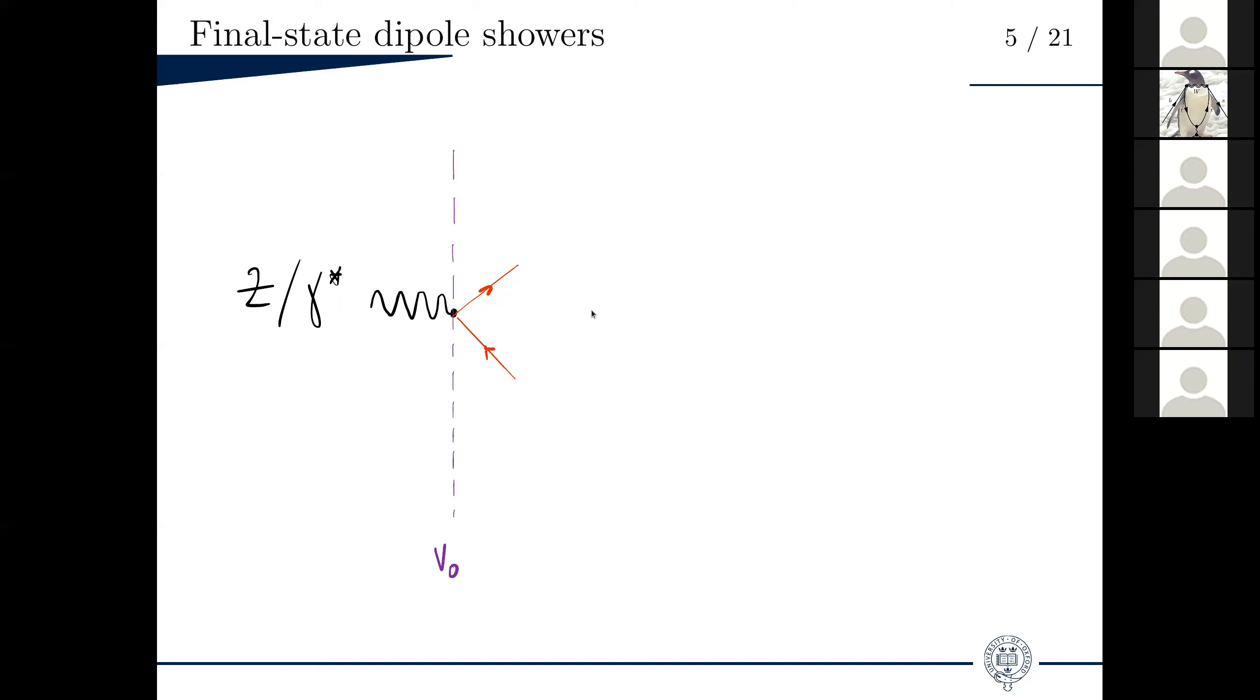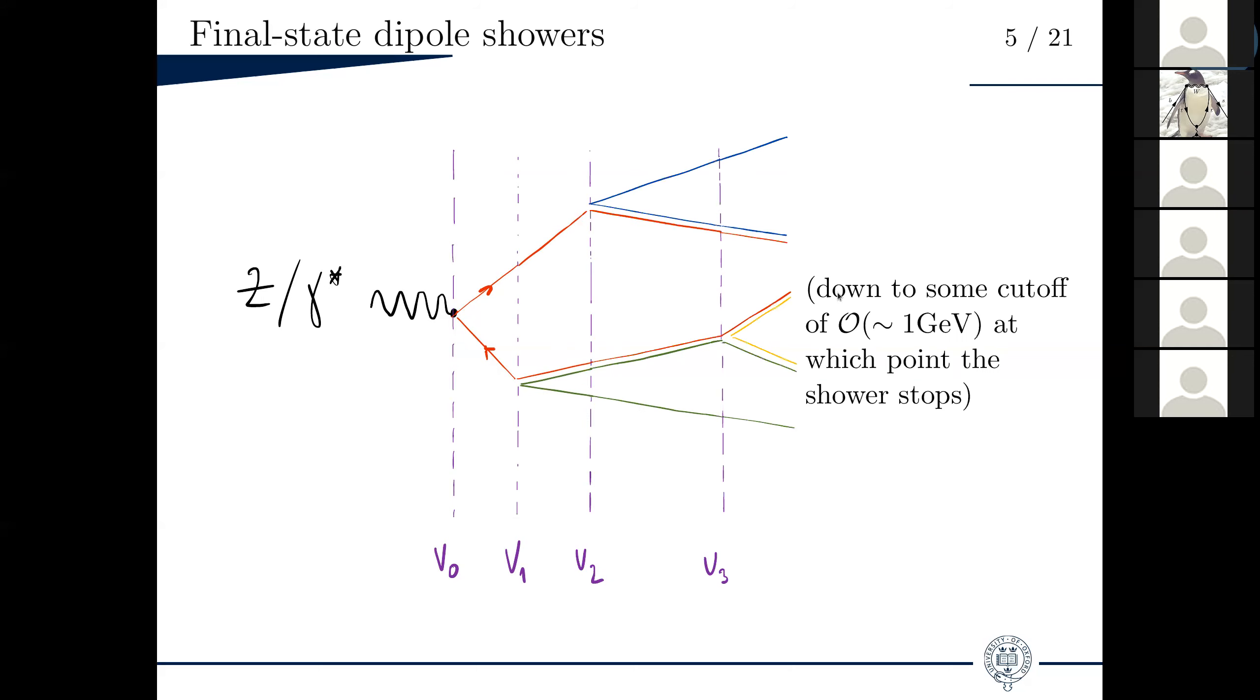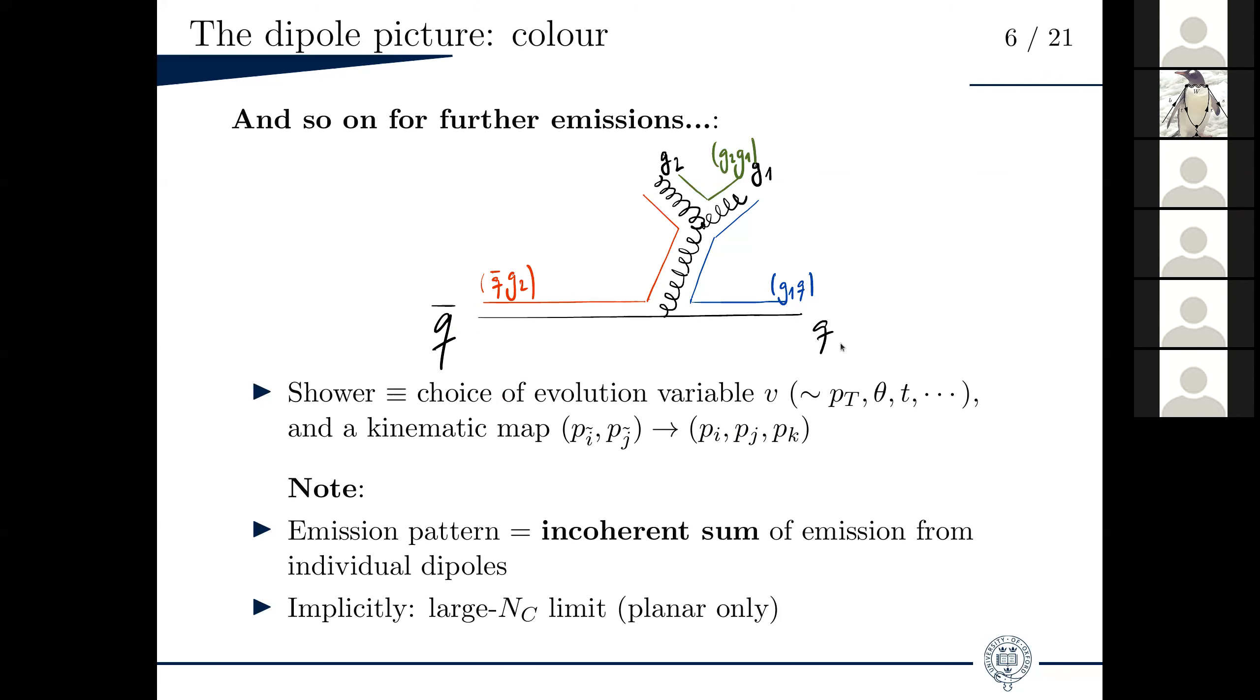Imagine that you start from a Q Q-bar event, say E plus E minus to Z to Q Q-bar. At this point, you have only one dipole, a Q-bar Q dipole, with an energy scale, V0, that is equal to the collision center of mass energy. As it turns out, that dipole obeys an evolution equation that gives you the probability of radiating or not radiating another colored particle at a lower scale. So effectively, iteratively for each emission, the algorithm samples the scale of the next emission according to that distribution. It chooses a value V1 at which one of the dipoles in your ensemble splits. So in that case, the red dipole splits and you get a new dipole, a green dipole at a scale V1. It does so iteratively down to some cutoff, which is taken to be of the order of the hadronization scale at which point the shower stops.